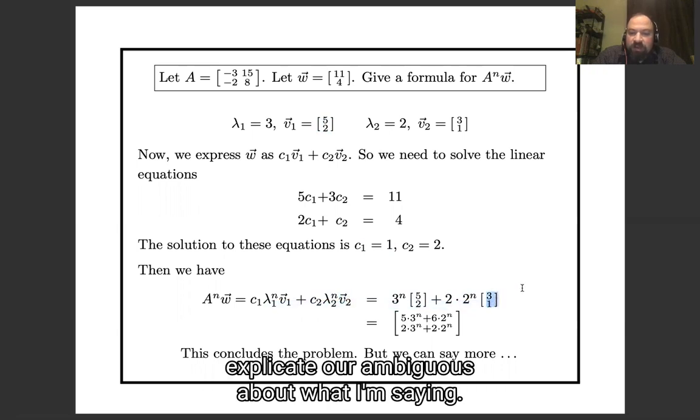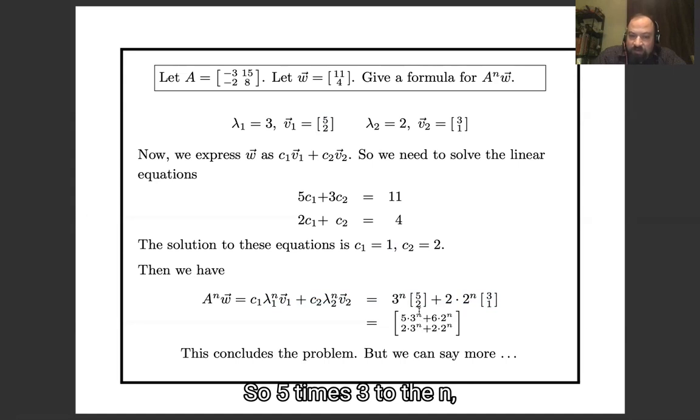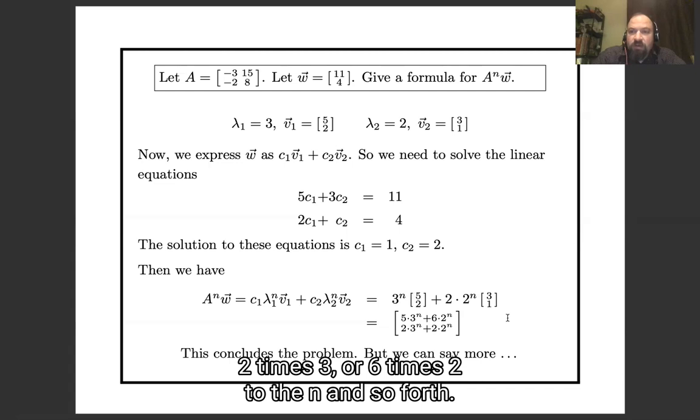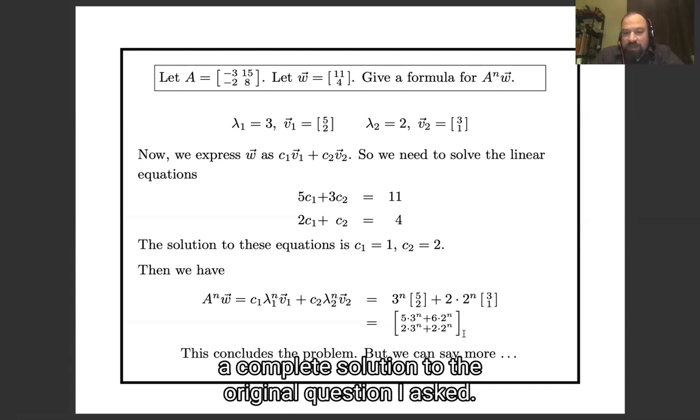And then just to be completely explicit and unambiguous about what I'm saying, I have combined that into a single vector over here. So 5 times 3ⁿ, 2 times 3 is 6 times 2ⁿ, and so forth. And at this point, we've solved the problem. I'm going to say more, but this is a complete solution to the original question I asked.